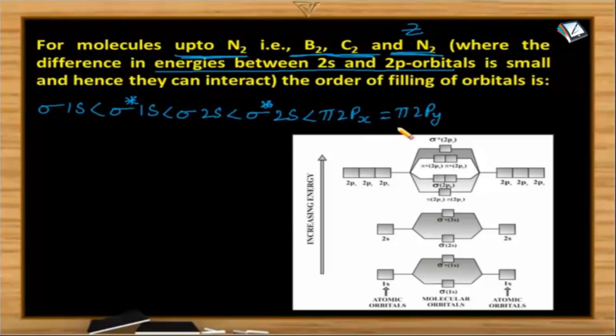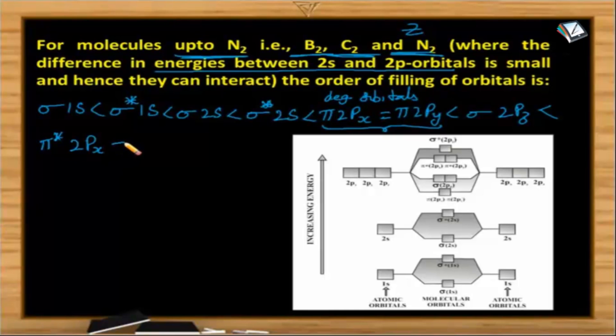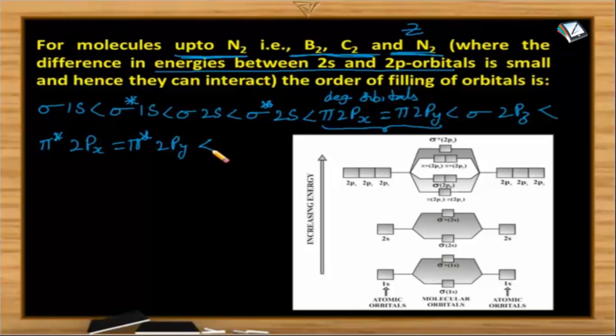What is the meaning of equal to here? It means the energy of the pi 2px orbital and pi 2py orbital is the same. And we call this kind of orbitals as degenerate orbitals. The orbitals which possess the same energy. Then after this comes the sigma 2pz orbital and which is less than the pi star 2px which is equal to pi star 2py less than sigma star 2pz.